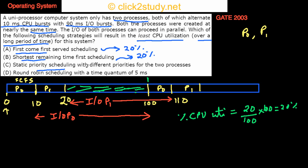What about static priority scheduling with different priorities for the two processes? Again, it's the same thing. Suppose one of them gets higher static priority — since priority doesn't change, P0 runs for 10, then P1 for 10, then the waiting period, and the same thing repeats. This also results in 20% CPU utilization.